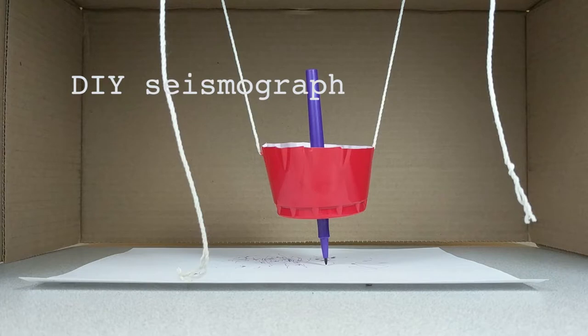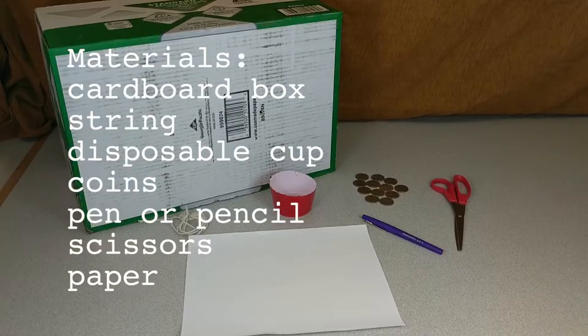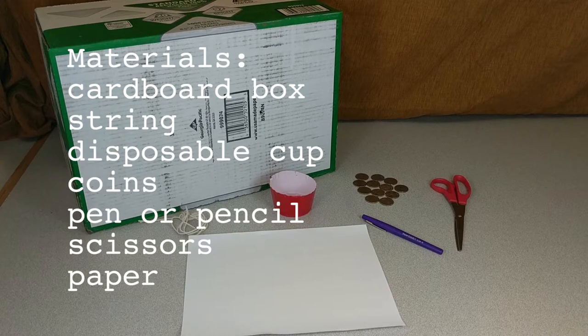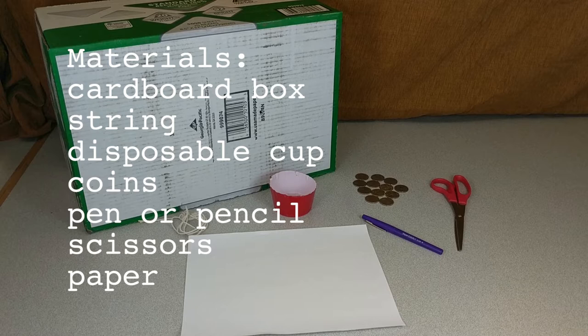To build your DIY seismograph you'll need a cardboard box, string, a disposable cup, coins, a pen or a pencil, scissors, and some paper.